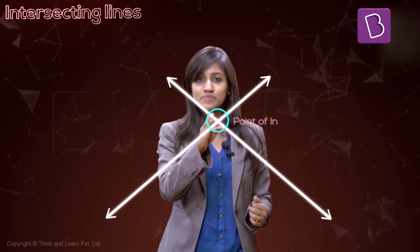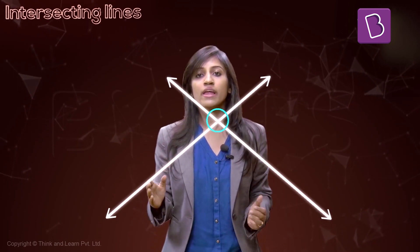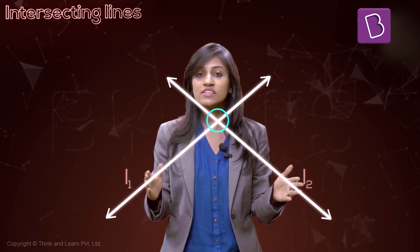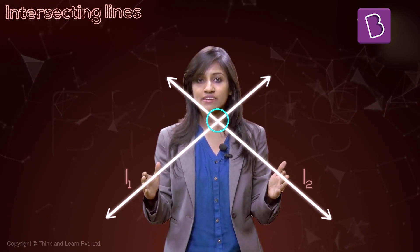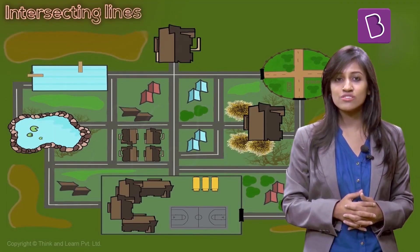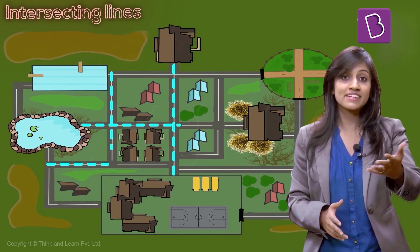In a fancy mathematical way, I can say line 1 (L1) and line 2 (L2) decided to cross paths, and when they did they intersected at the point M. Examples? You know your alphabets well — like the letter X. Ever been at the crossroads, lost and confused about which way to go? That's intersecting lines again.